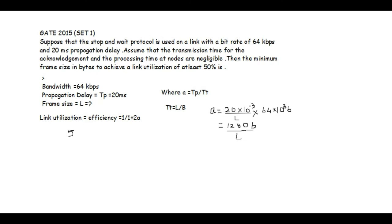So here efficiency or link utilization is required as 50% and we have to find out the frame size. So let's write it down then 50 upon 100 equals to 1 upon 1 plus 2 into 1280 upon L. Then it will become L upon L plus 2560.